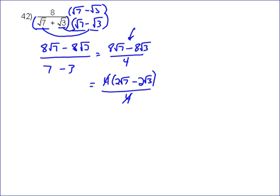The two 4s can cancel. And so that leaves you just with 2√7 minus 2√3. So in this step, we have the denominator rationalized, and in this step, we do some simplification. So your answer is 2√7 minus 2√3.